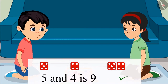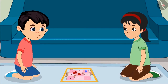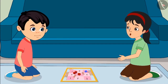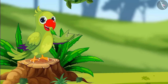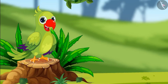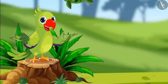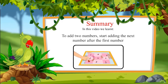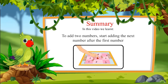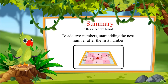Is that right, Pinky? Yes Chutu, you are absolutely correct. Hooray, I won the game! Come on, let's start again. This time, properly add the numbers on both dice and move your piece forward. So children, I hope you had fun watching the game of snakes and ladders. You too can now add two numbers like Chutu and Pinky. In this video, we learned that to add any two numbers, we need to start adding the next number after the first number. Goodbye, friends.